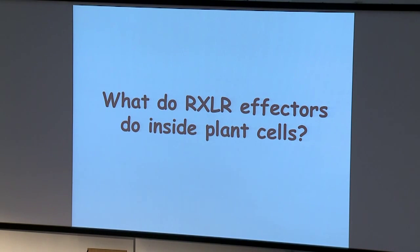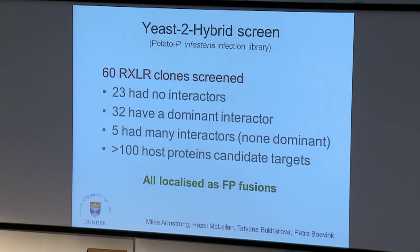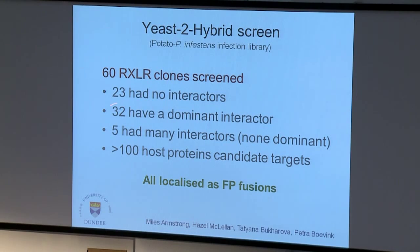The first question is what are these RxLR effectors doing inside plant cells? To address that, because we think many of the targets are going to be proteins, we've used a yeast two-hybrid screen. The library is a mixture of RNA samples from different time points during the potato–P. infestans interaction, screened with our RxLR effectors. 23 of them gave us no interactors at all. However, 32 of the effectors gave us a dominant interactor, and five were highly promiscuous, interacting with a wide range of different host proteins. So we have more than 100 plant proteins that are potential effector targets.